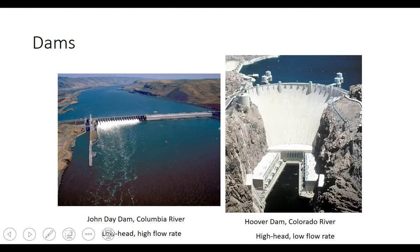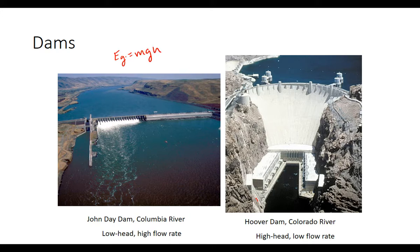There are two different kinds of dams. On the left you have a low head dam — an example is the John Day Dam on the Columbia River in Washington. Going back to our mgh equation, a low head dam has a lot of mass but a small height. The dam is not very tall, but it has a lot of water flowing through it, which is advantageous in flat areas. You can't easily have a really tall dam there, but the Columbia River has a lot of water.